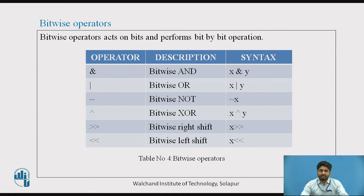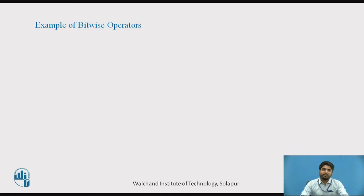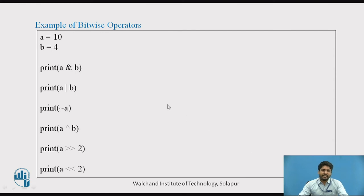Bitwise is basically used to perform bit by bit operation. Here I have taken a value as 10, b value as 4, and used all the operations like and, or, nor, xor, greater than, and less than. The output for this program will be 0, 14, minus 11, 14, 2, and 40.